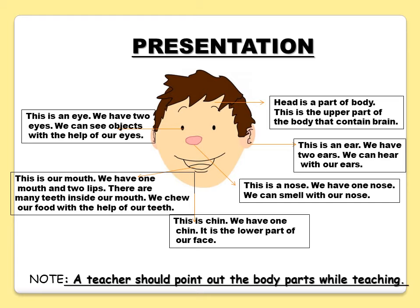This is the chin — we have one chin and it is the lower part of our face. This is our mouth — we have one mouth and two lips. There are many teeth inside our mouth; we chew our food with the help of our teeth. This is an eye — we have two eyes and we can see objects with the help of our eyes.